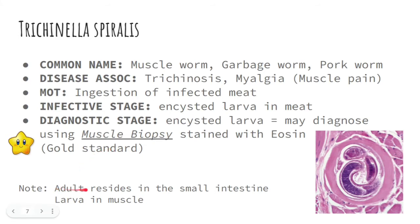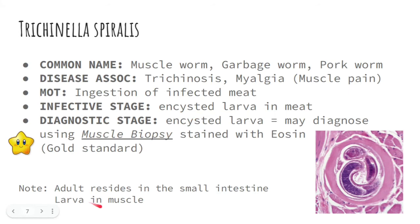Note: the adults of Trichinella spiralis reside in the small intestine. When asked where the adults are, the answer is the small intestine. However, when asked about the larva — specifically the encysted larva — it can be found in the muscles. Adults of Trichinella spiralis are in the small intestine, while the encysted larva can be found in the muscles.